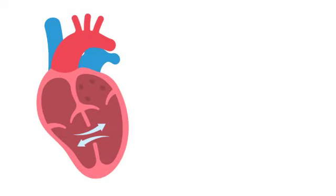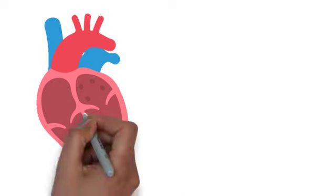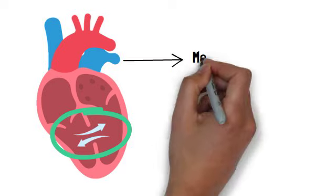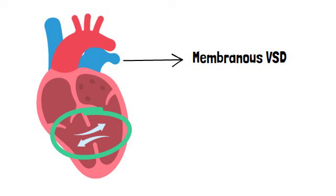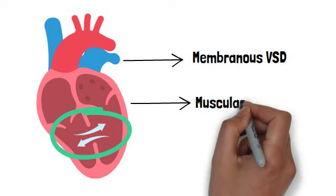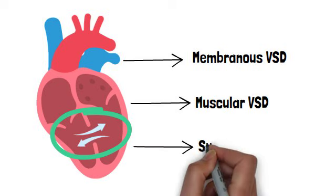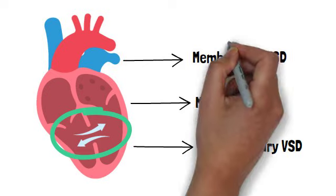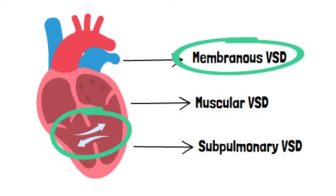A ventricular septal defect is a birth defect of the heart in which there's a hole in the septum that separates the ventricles of the heart. There are three types of ventricular septal defects: membranous VSDs, muscular VSDs, and subpulmonary or infundibular VSDs. Membranous VSD is the commonest type.